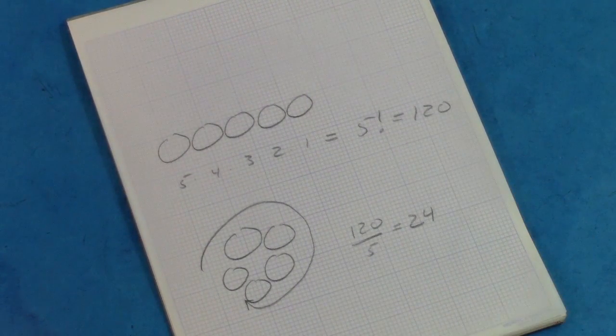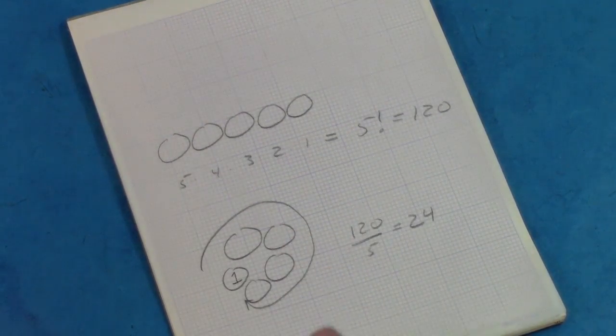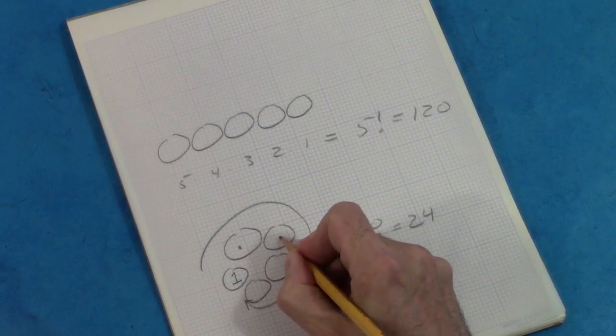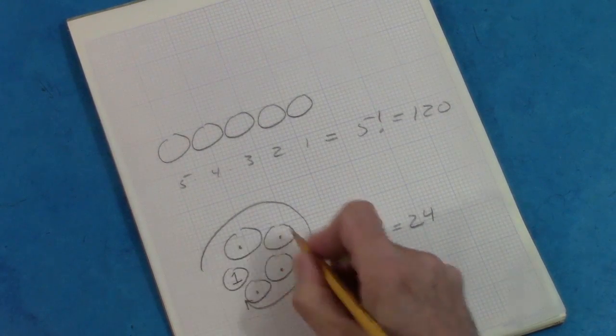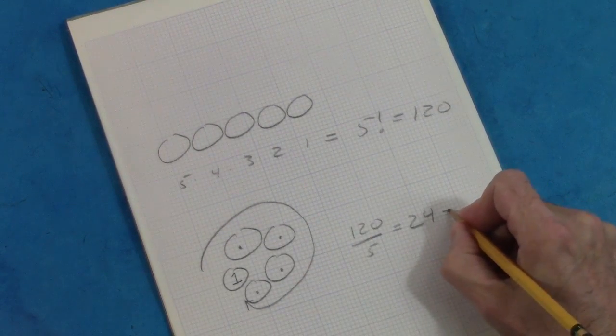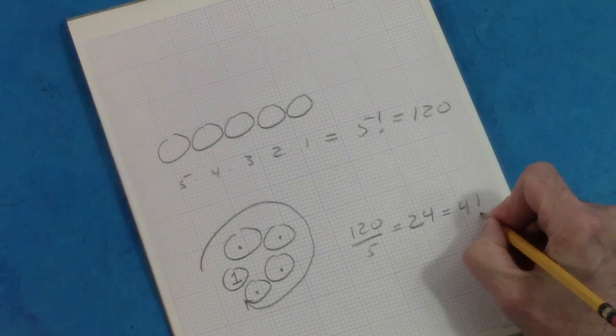Another way to see that is to always list a particular color first, say red, then going around from there, there are four slots you can fill in with the remaining four colors, so four factorial possibilities, which is 24.